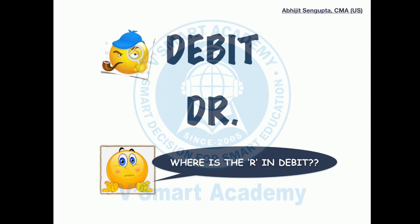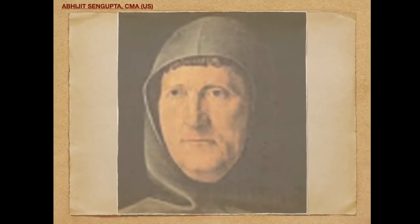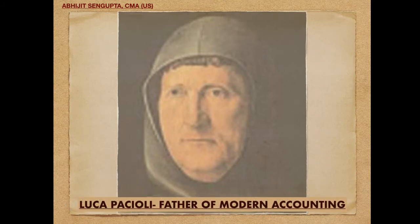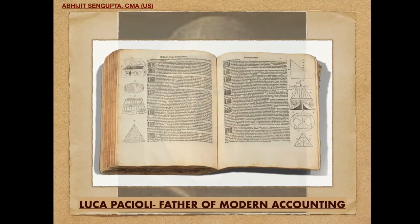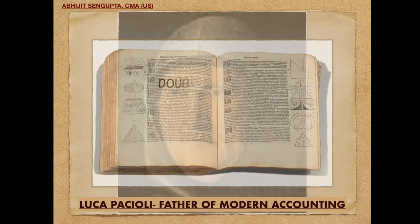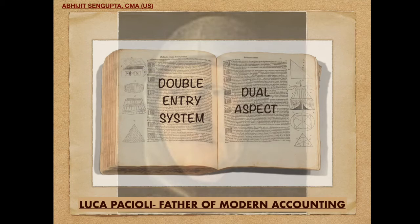So friends, this secret is going to take us a little into the past. Who you are watching on the screen is none other than the Father of Modern Accounting, Mr. Luca Pacioli. He was a famous Italian mathematician, and he introduced us to the double entry system of accounting in his book on mathematics called Summa de Arithmetica. Here we are aware of the dual aspect concept.